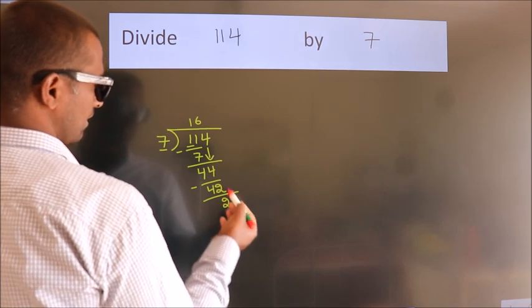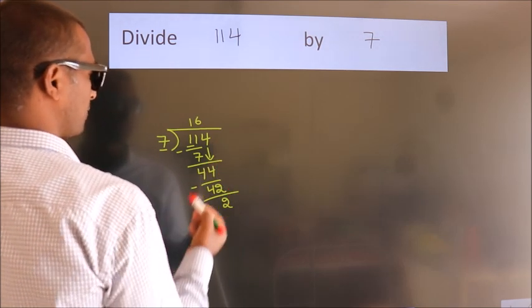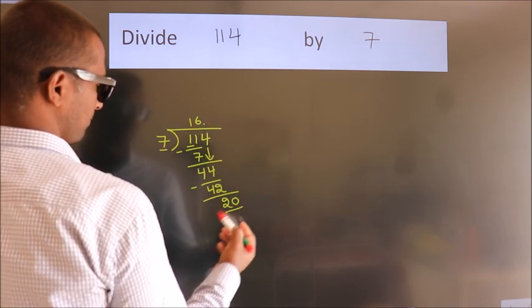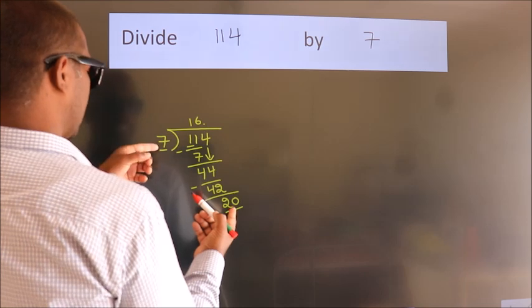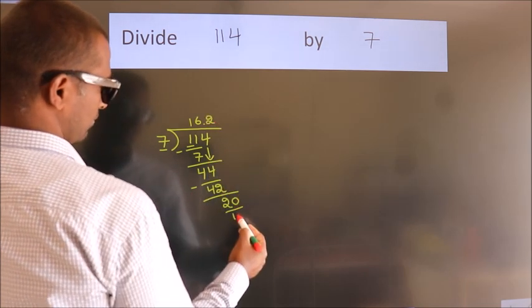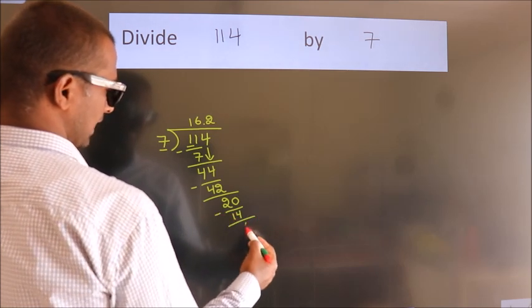After this, no more numbers to bring down. So we put a dot and take 0. So 20. A number close to 20 in the 7 table is 7 times 2, which is 14. Now we subtract and get 6.